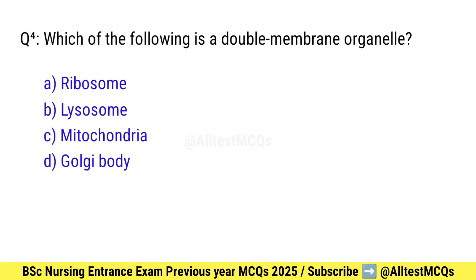Question number 4. Which of the following is a double membrane organelle? Right option is C: Mitochondria.